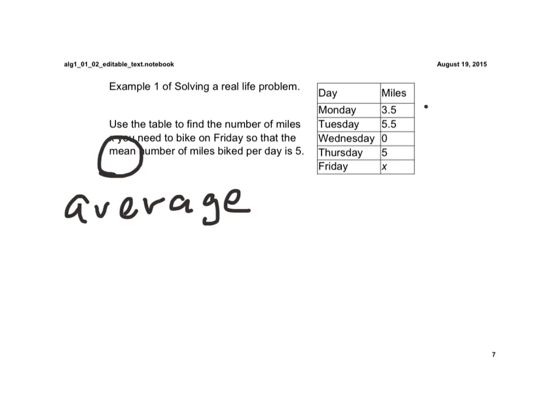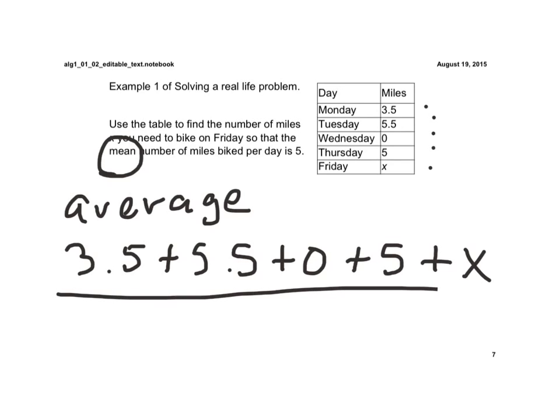So we count 1, 2, 3, 4, 5. So remember, to find the average, we add up all the numbers. So we have 3.5 plus 5.5 plus 0 plus 5 plus x, all divided by 5, equals what we want to average per day, which is 5.